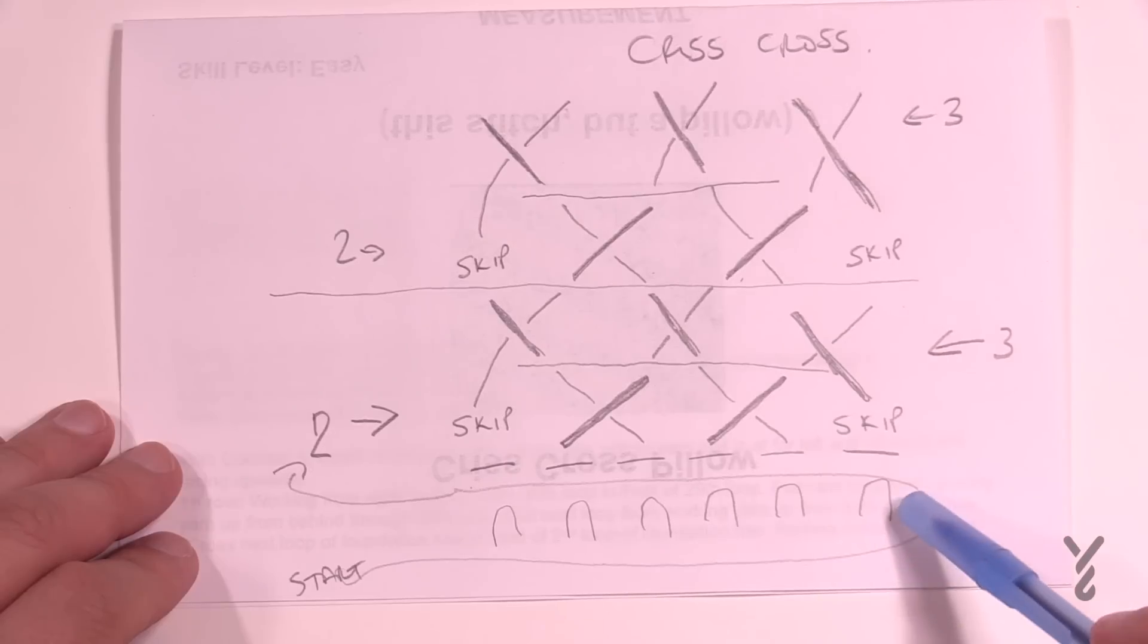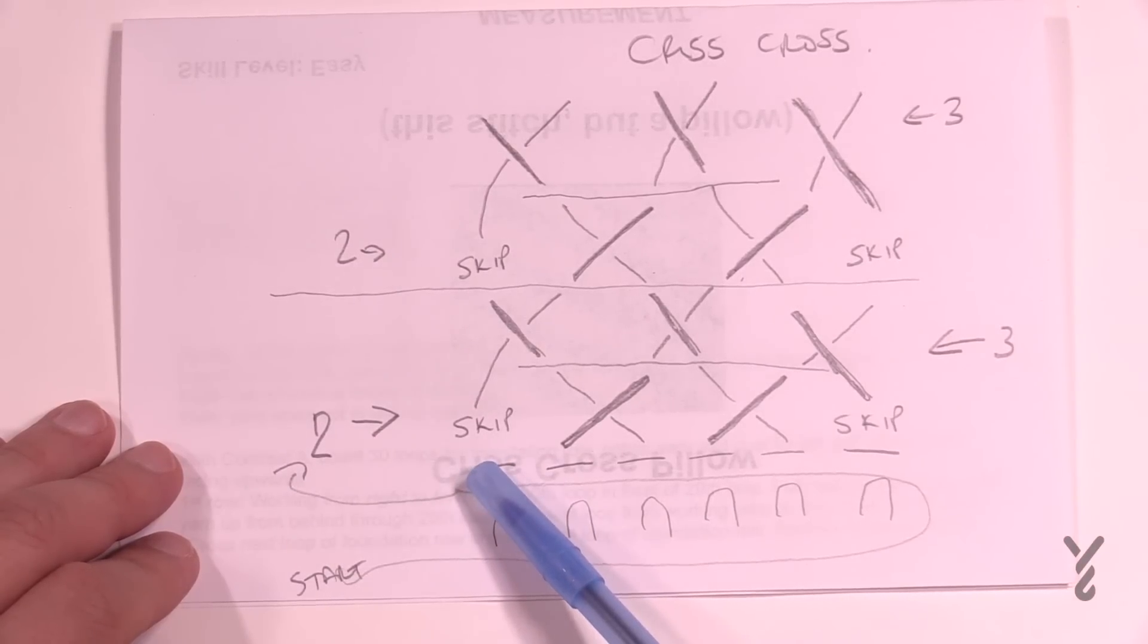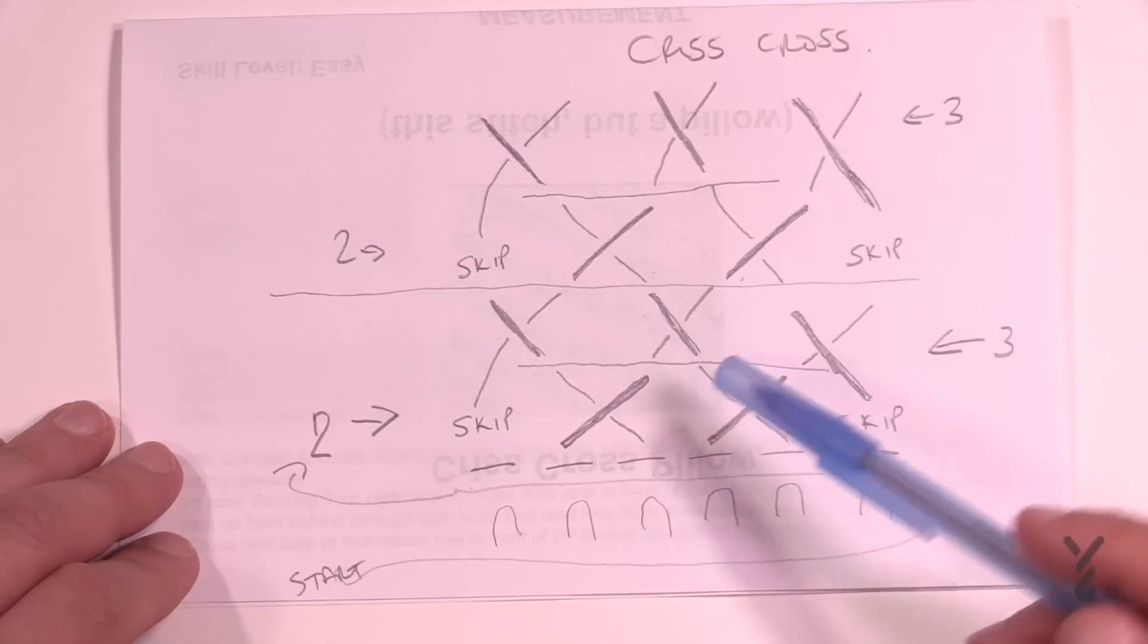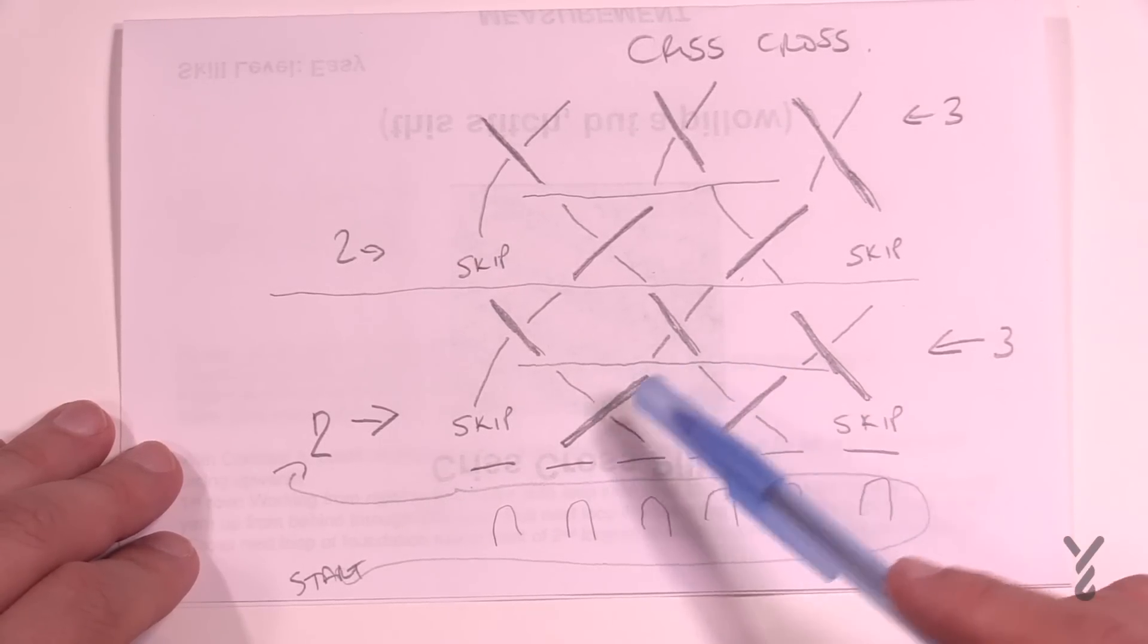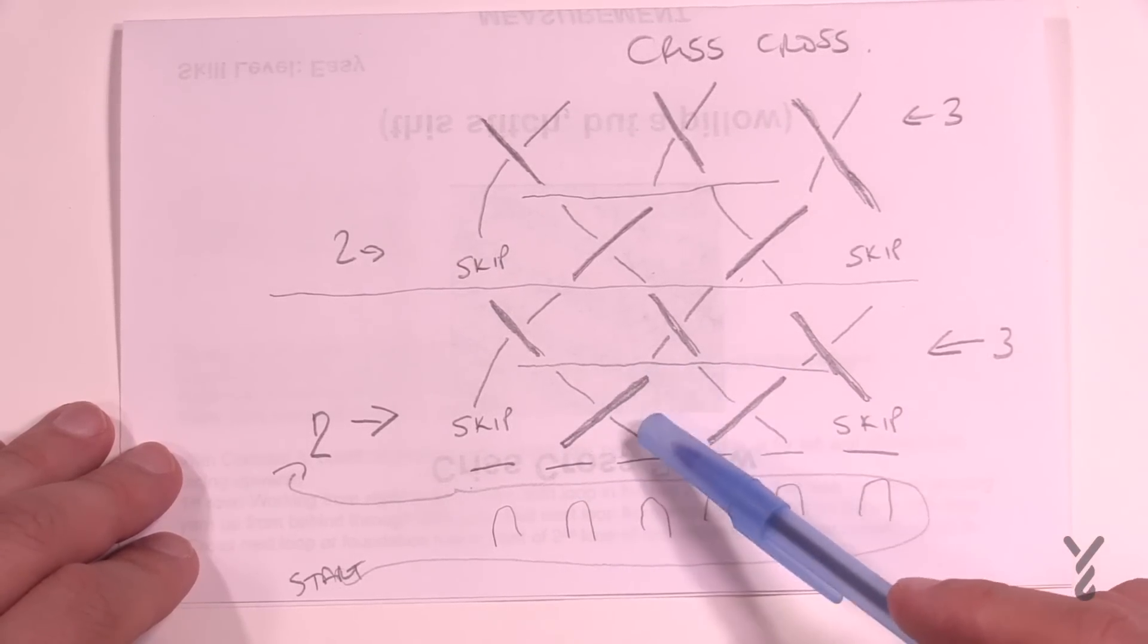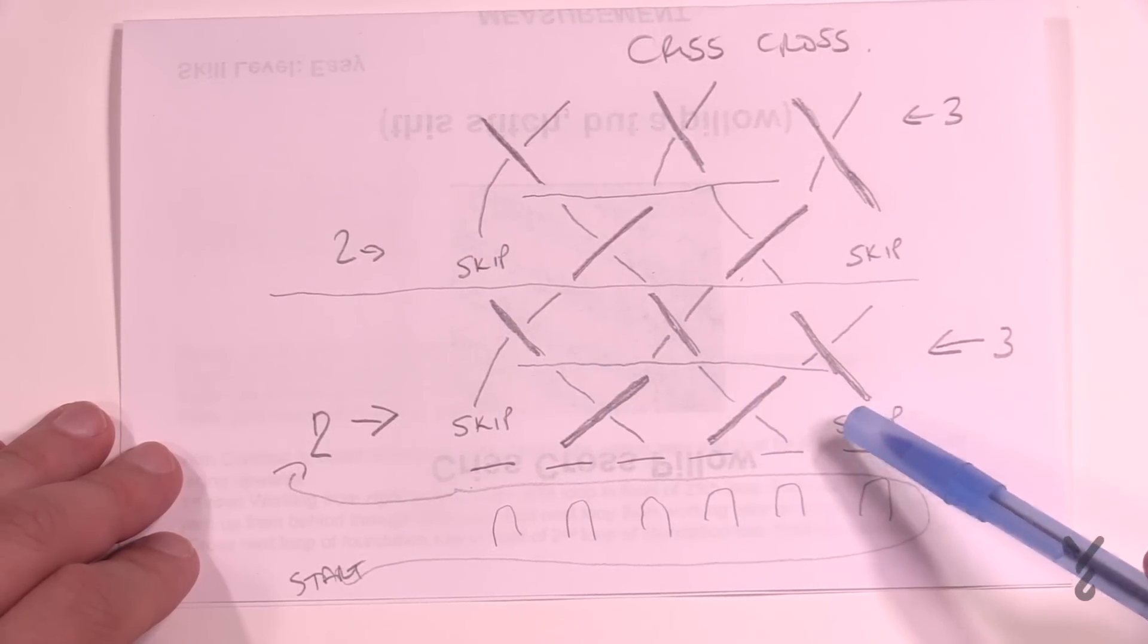We're going to start here, capture our cast on for the first six loops, then start doing the crisscrossing in row number two. In row two we're going to skip the first stitch and then do a crisscross. Notice that I highlighted one cross over more than the other - this one's in front, this one's in behind.